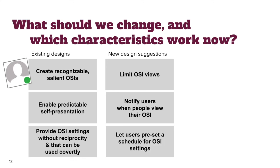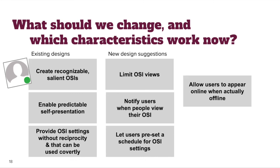Could apps allow users to preset a schedule determining when their OSI settings should be turned off? For example, maybe I want my OSI to reflect accurately during work hours, but never show me as online in the evenings because I don't want co-workers to see that I'm working and decide to ask me questions. Since apps currently only allow users to appear as offline even if they're actually online, would some users prefer to appear as online? Although this could undermine useful aspects of OSIs, it could likely be implemented by a third party without requiring buy-in from app developers.